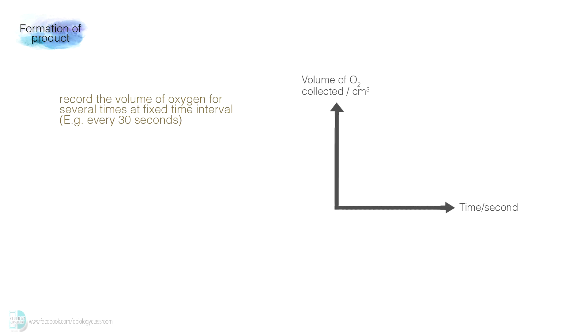If you want to have a more accurate calculation, you can record the volume of oxygen for several times at fixed time intervals. Then plot the data into a graph. Work out the gradient of the graph at the start. This is the initial rate of reaction, where the substrate is abundant and the reaction is the fastest. It represents the rate of reaction more accurately, as the substrate concentration is not a limiting factor at that point.